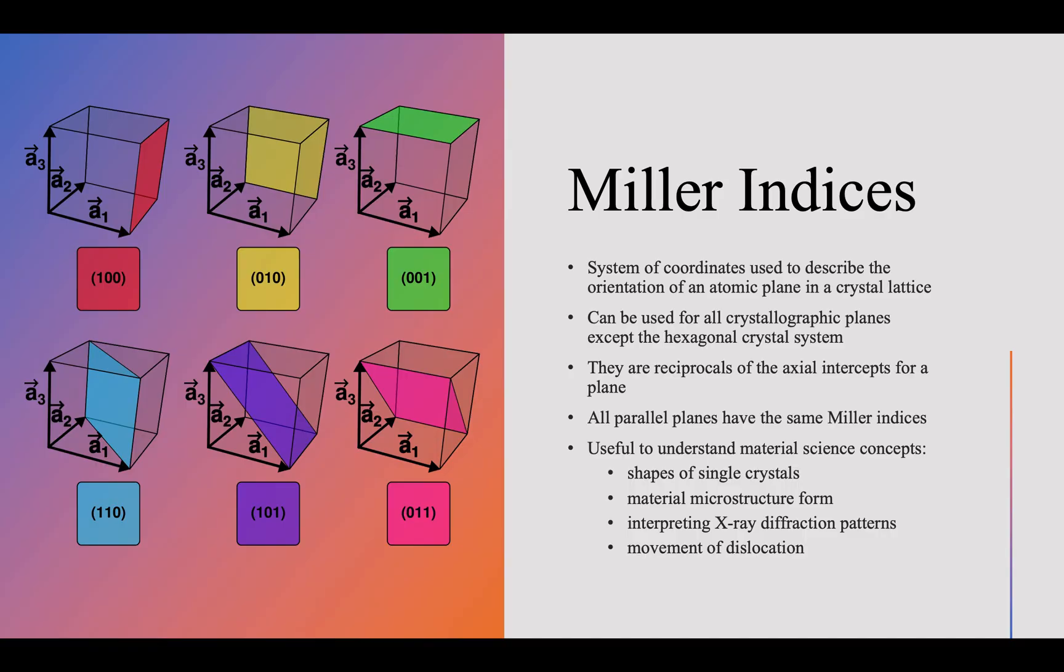Miller Indices are a system of coordinates used to describe the orientation of an atomic plane in a crystal lattice. Miller Indices can be used for all crystallographic planes except the hexagonal crystal system as there is a different method used to find these planar indices.